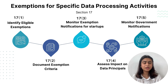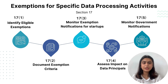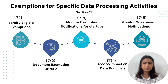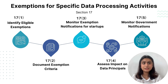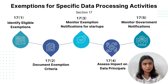Third, monitor exemption notifications. Here we need to regularly monitor notifications from the central government that specify exemptions applicable to startups or other data fiduciaries, adjusting compliance strategies accordingly. For example, an XYZ startup regularly checks for updates from the central government to ensure it benefits from any applicable exemptions while staying compliant with the other DPDP Act provisions.